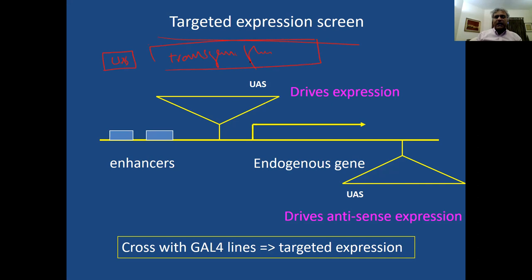Now, these fly lines, you cross with GAL4 driver lines. And what is going to happen, GAL4 is going to go and bind on this, you have UAS binding sites. And if our UAS is integrated upstream of individual gene, we will see overexpression of this particular gene. And this can be done in eyes. This can be done in any specific tissue by using specific GAL4 driver lines. And then you can see effect of this overexpression of a particular gene on the development of phenotypes.